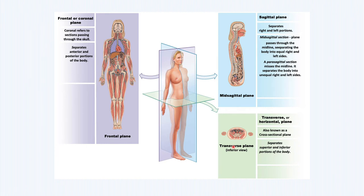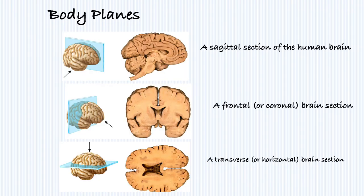Depending on the level at which you take the imaging — this picture is taken at the level of the pelvis — so we are totally missing organs such as the heart, the lungs, and the brain.